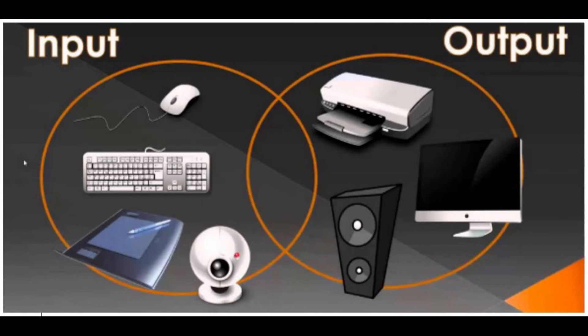Magnetic Ink Card Reader (MICR) input device is generally used in banks as there are a large number of checks to be processed every day. The bank's code number and check number are printed on the checks with a special type of ink that contains particles of magnetic material that are machine-readable. This reading process is called Magnetic Ink Character Recognition (MICR). The main advantages of MICR is that it is fast and less error-prone.